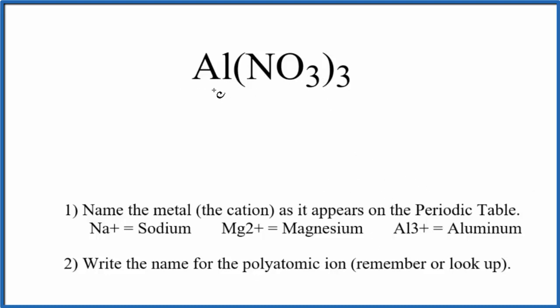First, we write the name of Al as it appears on the periodic table. That's aluminum. Next, we write the name of the polyatomic ion. That's the nitrate ion. So for the nitrate ion, we just write nitrate, lowercase n.